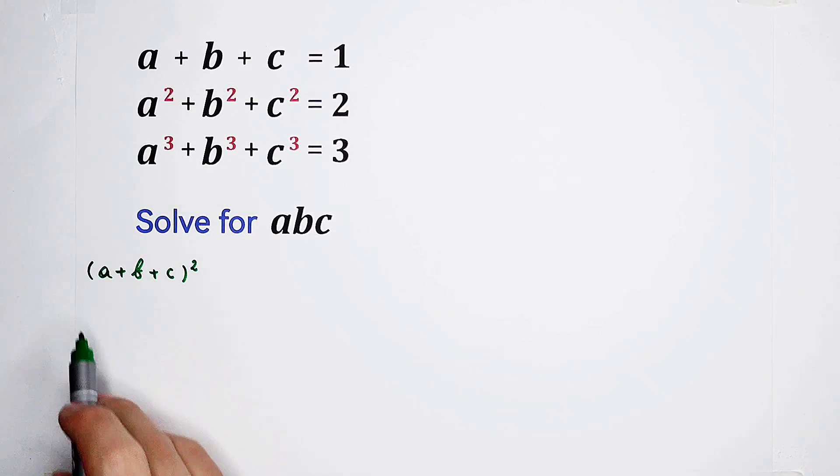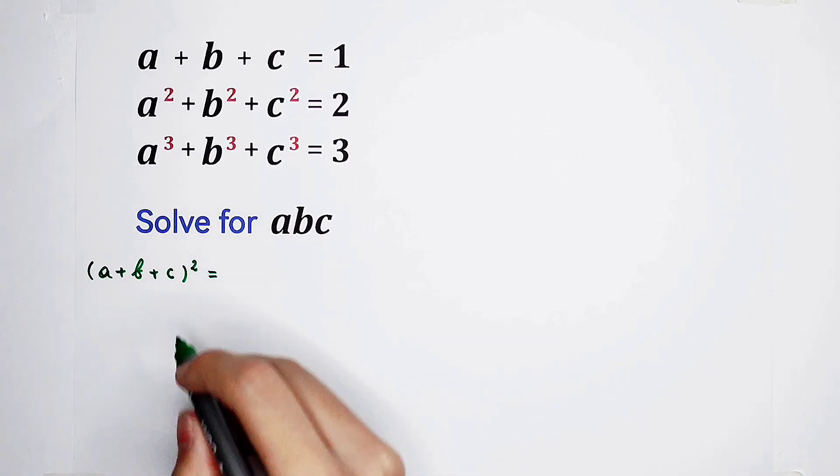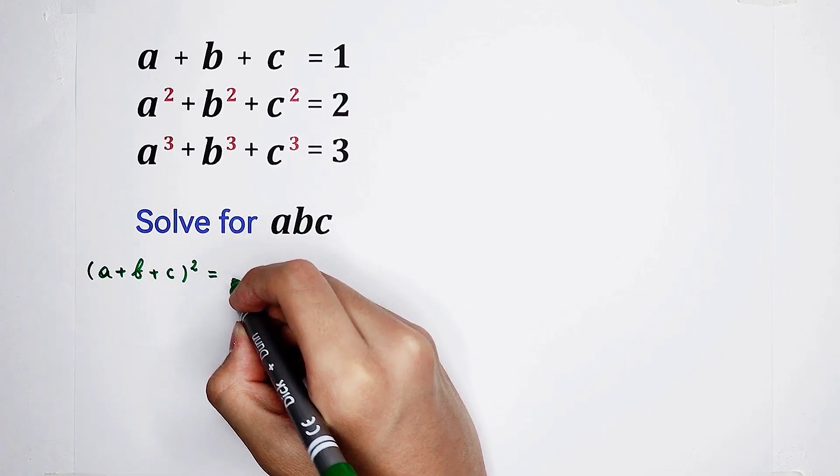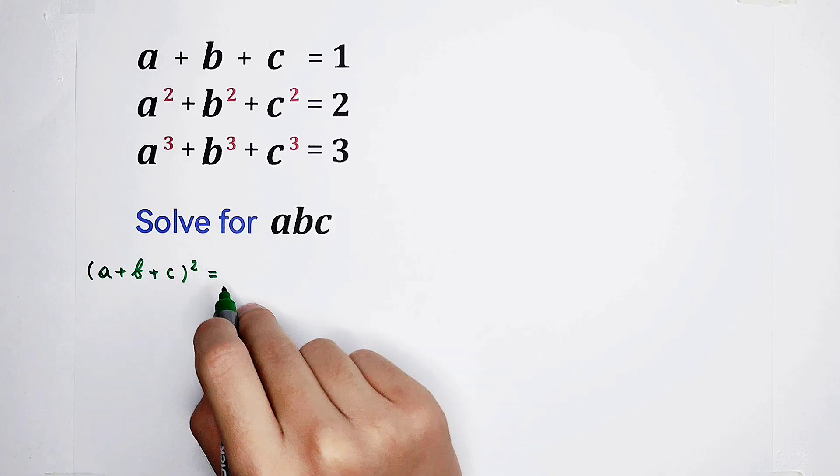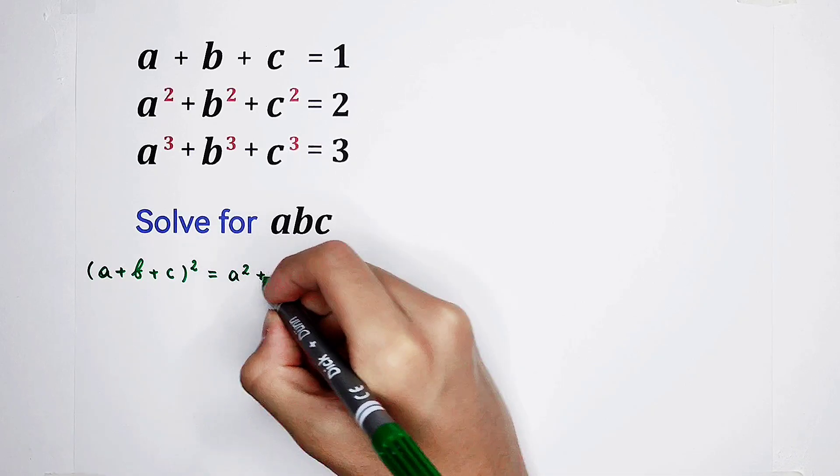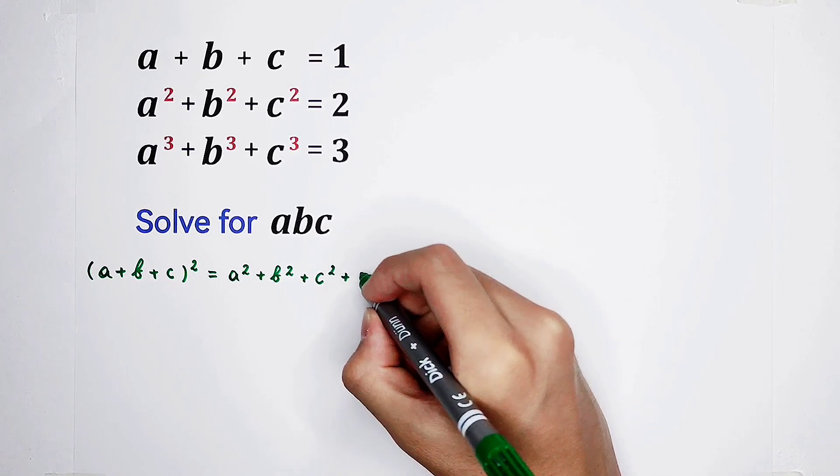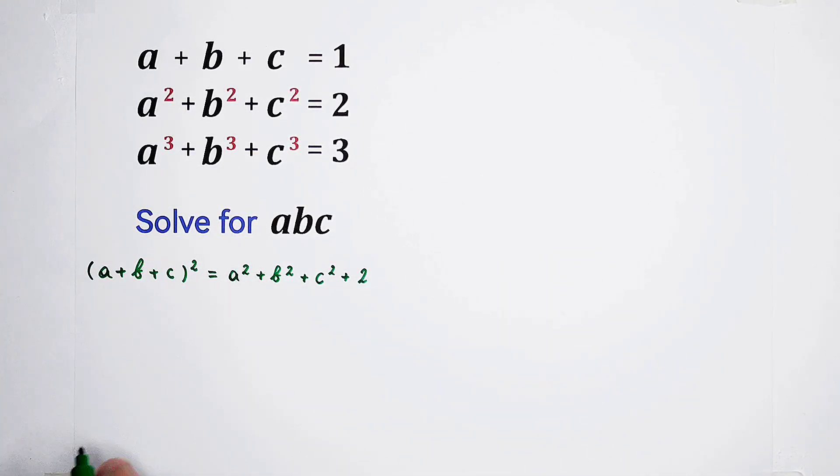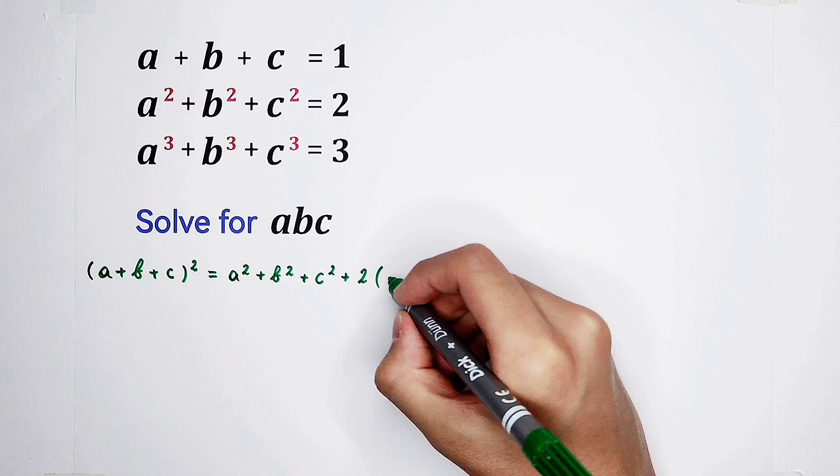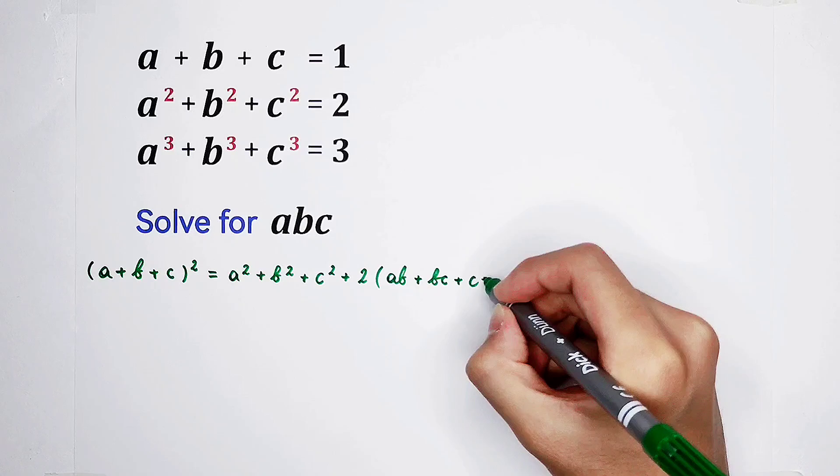The square of a plus b plus c equals a squared plus b squared plus c squared plus 2 times the sum of ab, bc, and ca.